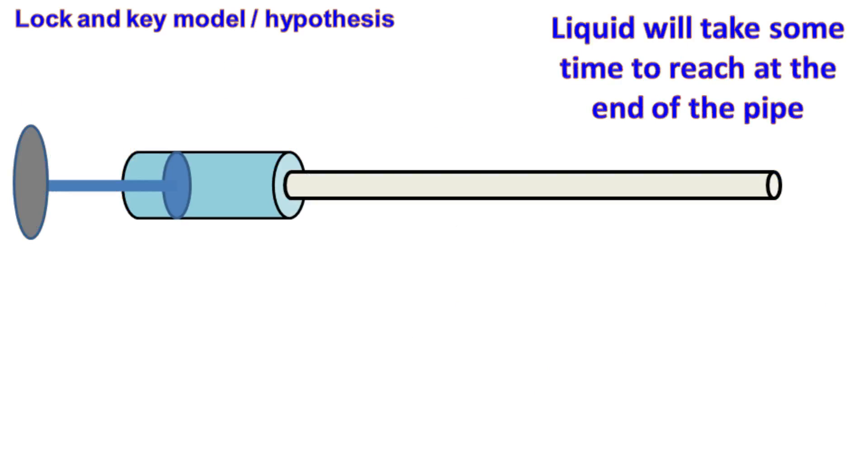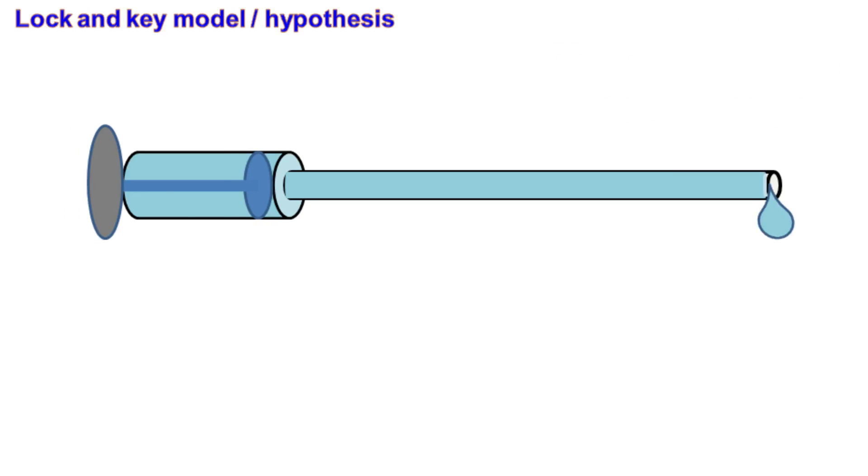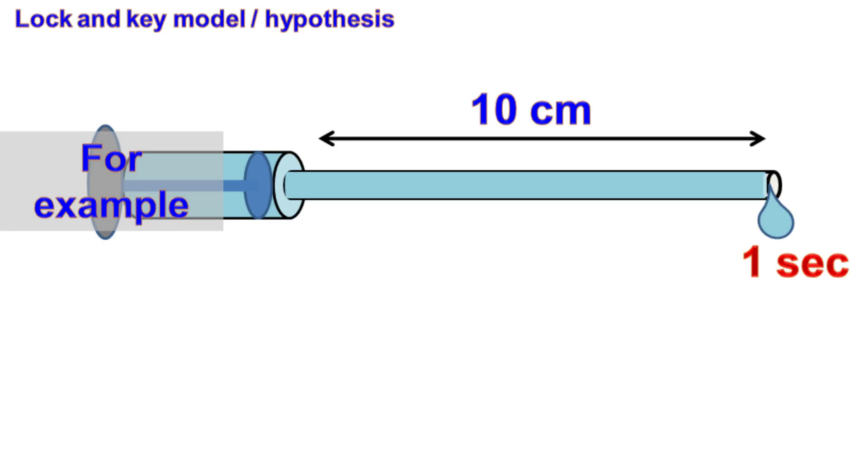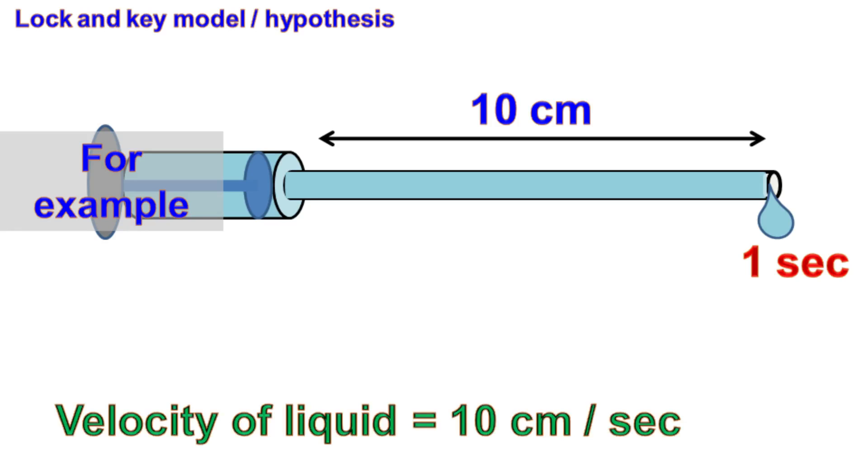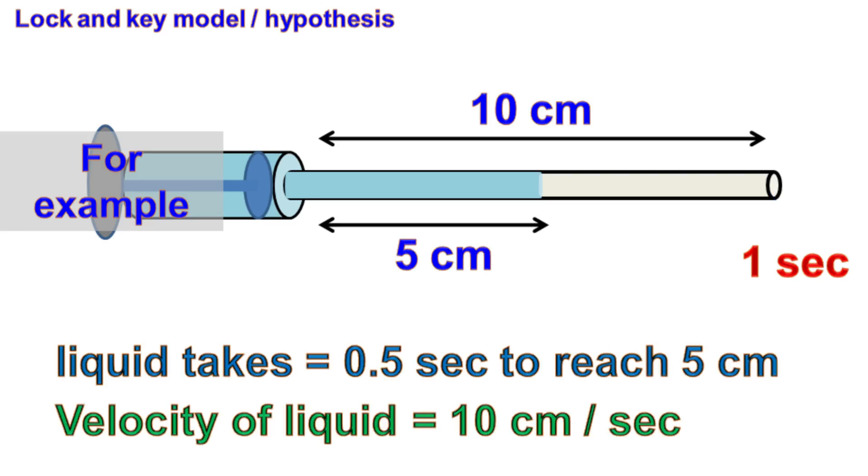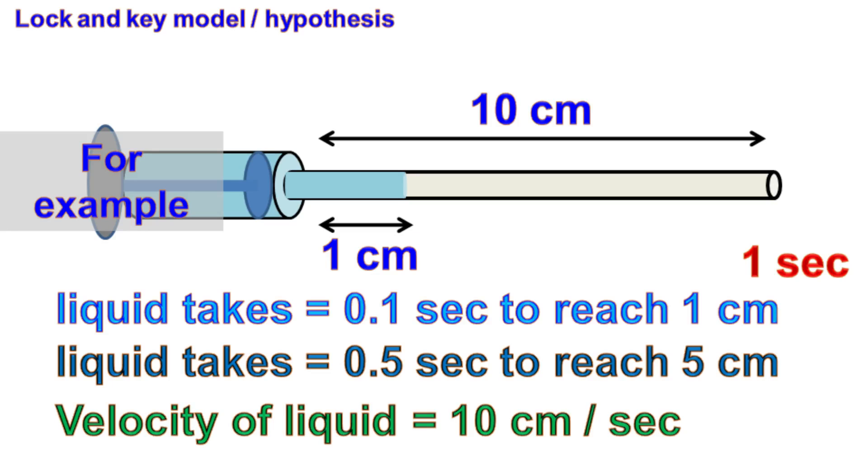If we have a syringe filled with a solution and we purge the solution in the pipe, it takes some time for the solution to reach the end of the pipe. Let's say the length of the pipe is 10 cm and it takes 1 second to reach the end of the pipe. This means it will take half a second to reach 5 cm of the pipe and one-tenth of a second to reach 1 cm.